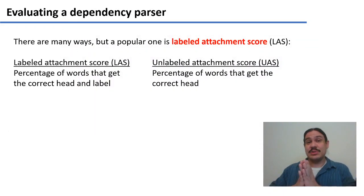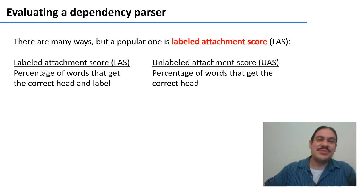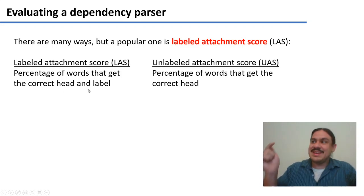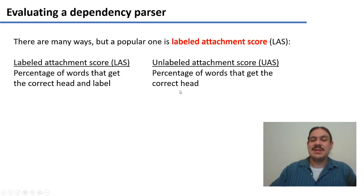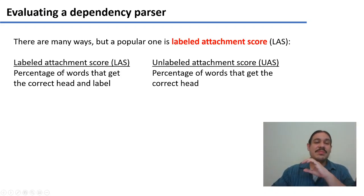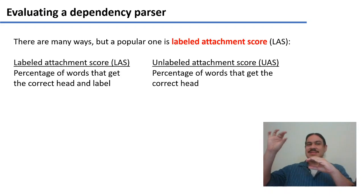How do we know if these parses are working? If we have a dependency parser producing predictions, we evaluate it by counting the labeled attachment score. The labeled attachment score is the percentage of words that have the correct head and the correct label on the arc going to them. The unlabeled attachment score is similar but only counts whether a word is linked to the correct head — it doesn't care about the label. We'll use the more complex labeled attachment score, which requires both the correct head and the correct label.